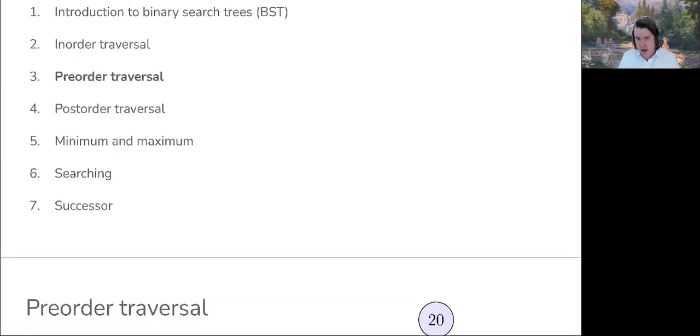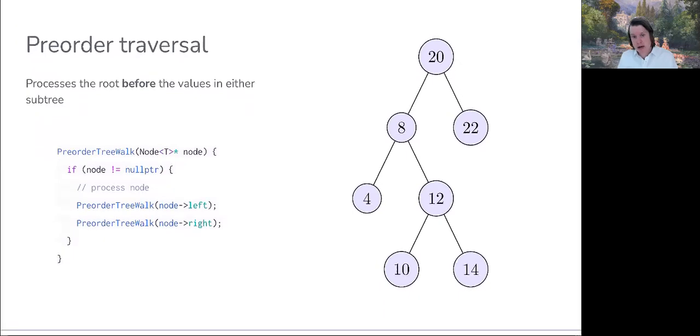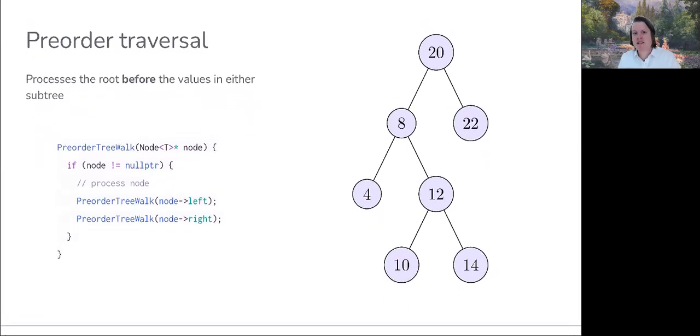Let's go ahead and get into what a pre-order traversal is. In a pre-order traversal, we're going to process the root before the values in either subtree. So if we're going through this, notice that in this invocation, we'd start out with the root. We'd process 20 first, then we'd step left. We'd process the root first.